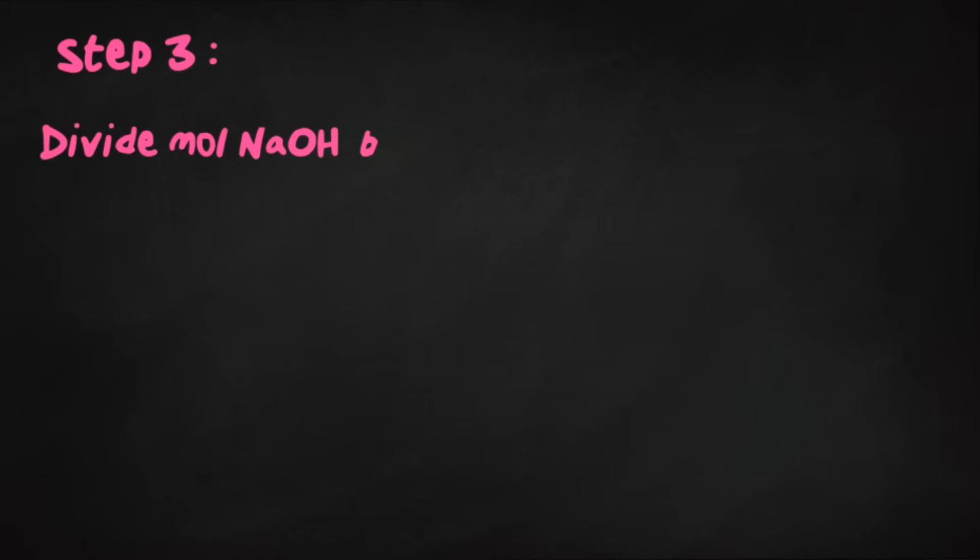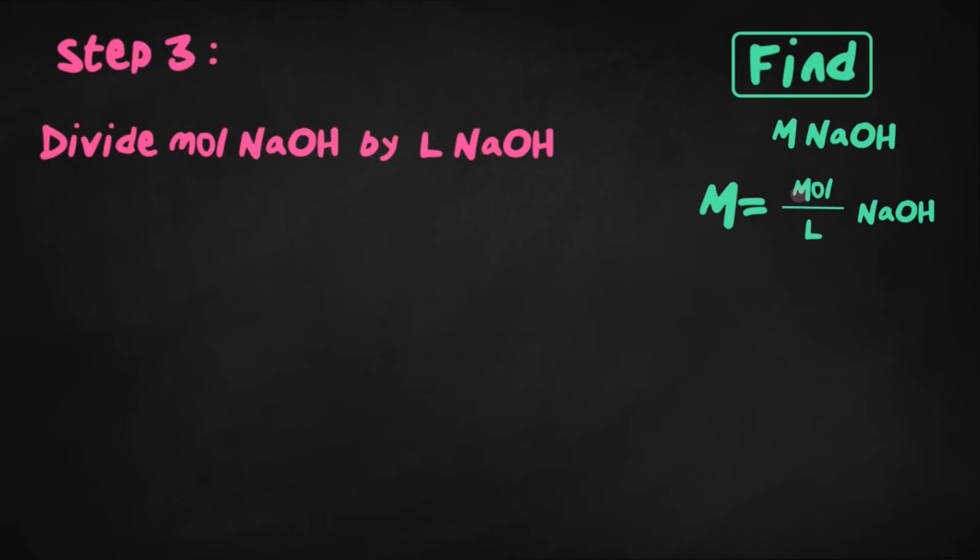Our last step is to divide moles of NaOH that we found in step one by the liters of NaOH that we found in step two. Because we're finding molarity, which was the moles of NaOH divided by the liters of NaOH, this is why we first have to start with finding our moles of NaOH, then finding our liters of NaOH, dividing, and that's our final answer.